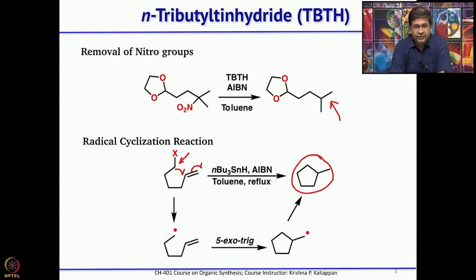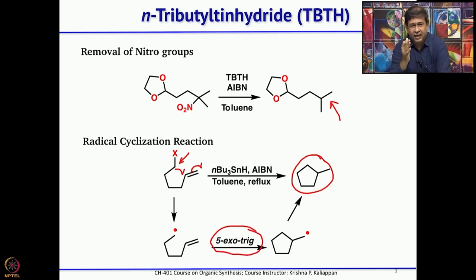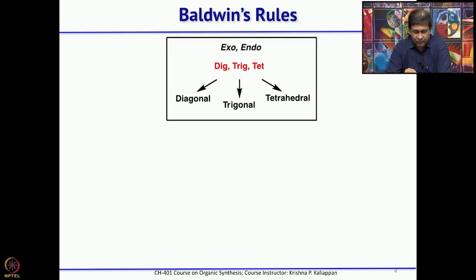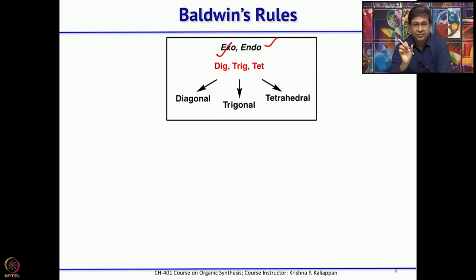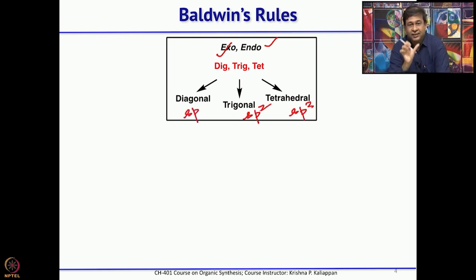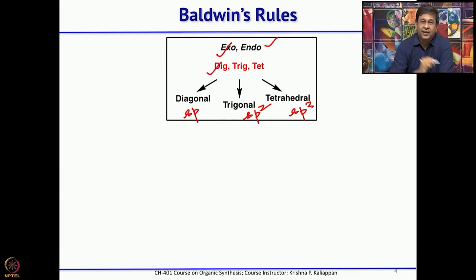In many papers you will see notation like 5-exo, 6-endo with labels trig, dig, and tet. Dig means diagonal (sp carbon), trig represents trigonal (sp2 carbon), and tet represents tetrahedral (sp3 carbon) — these are the carbon atoms accepting the radical. If your acceptor has an sp carbon atom you write dig; if sp2, you write trig; if sp3, you write tet.